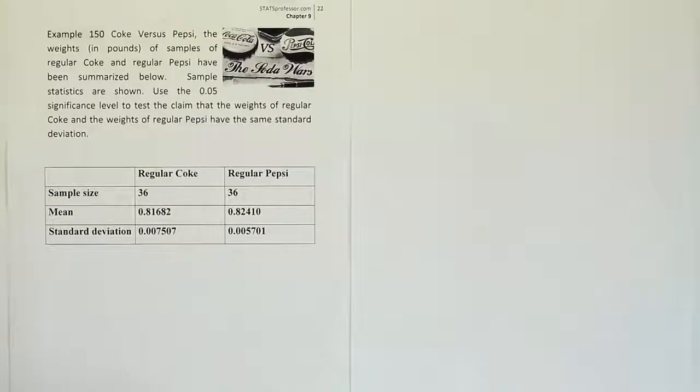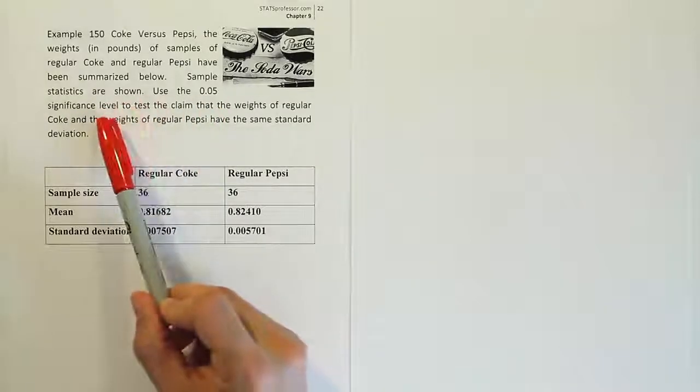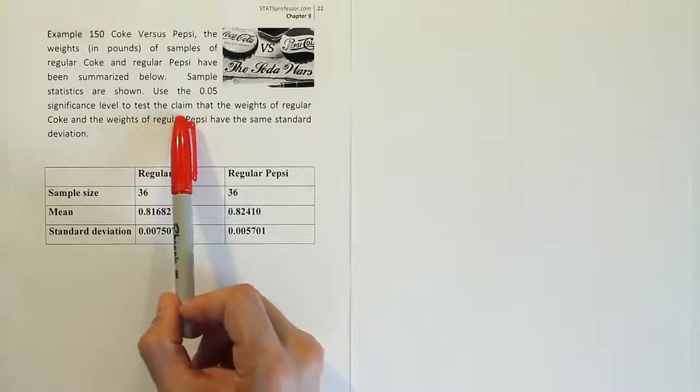Okay, so this problem is not very interesting in its topic or subject matter, so what we're doing it for is mainly just to run another example of the test that compares two population variances. And so how do I know that's the hypothesis test I'm dealing with here? Well, of course it says use the 5% significance level to test the claim, so I know it's a hypothesis test.